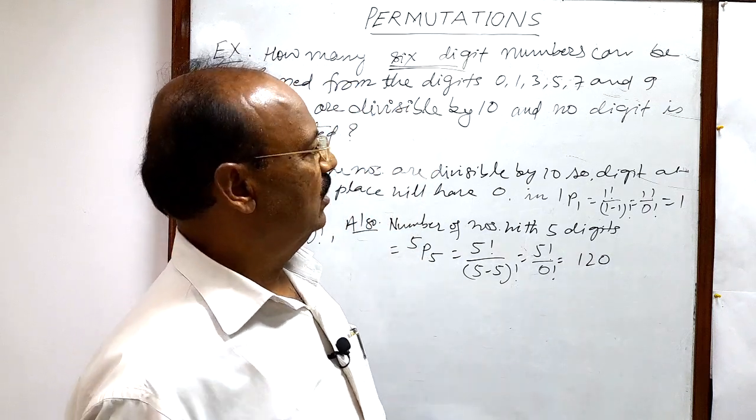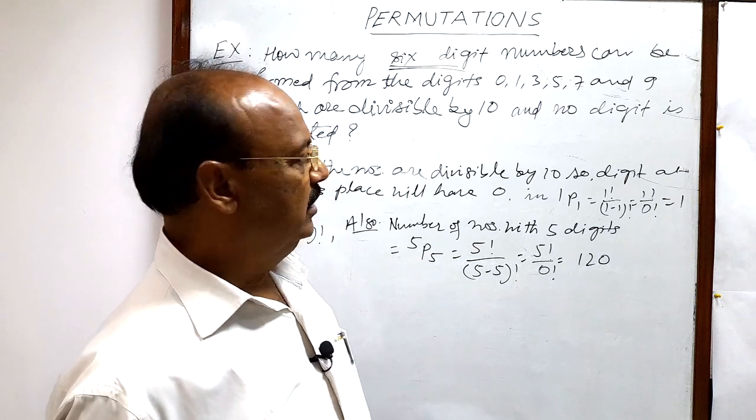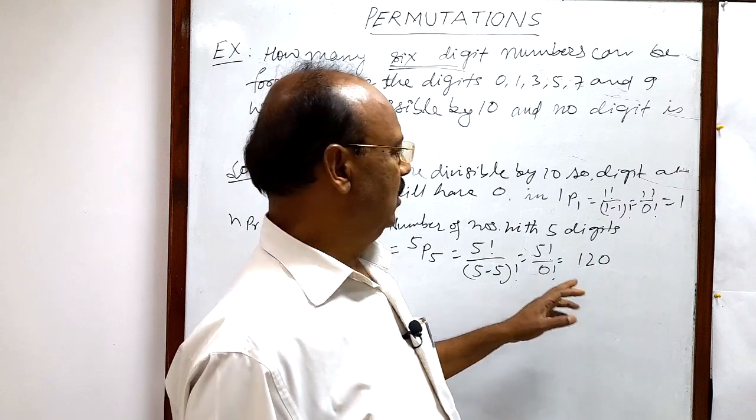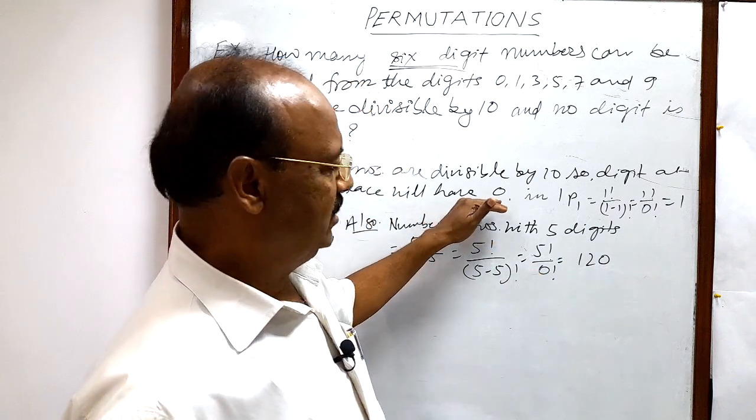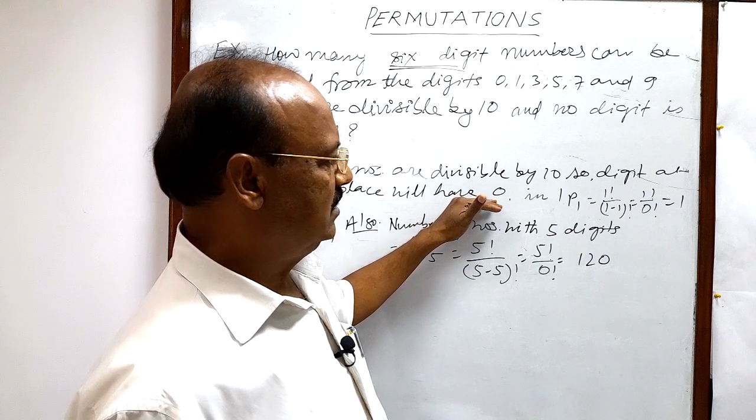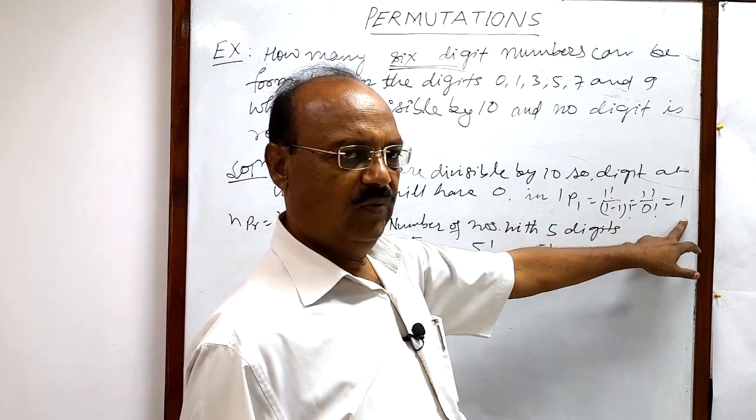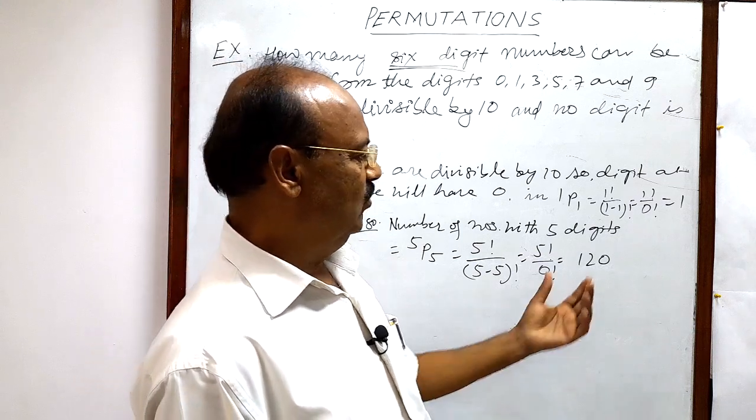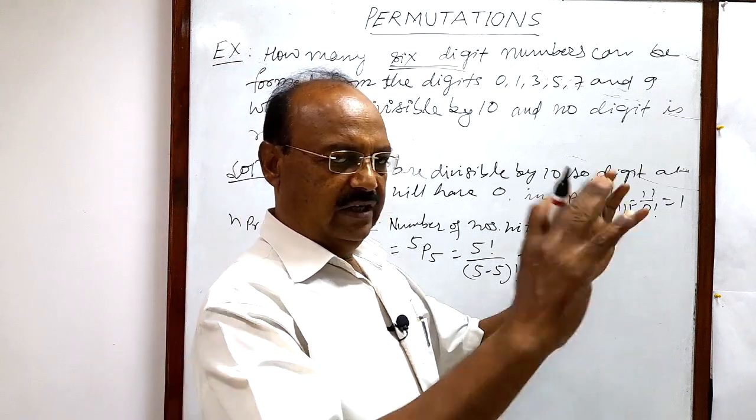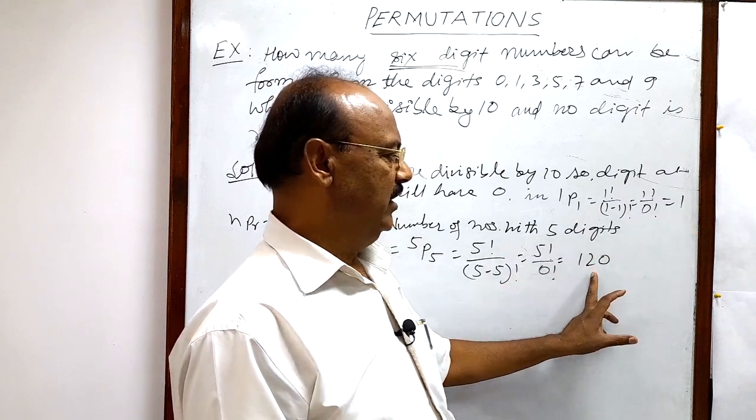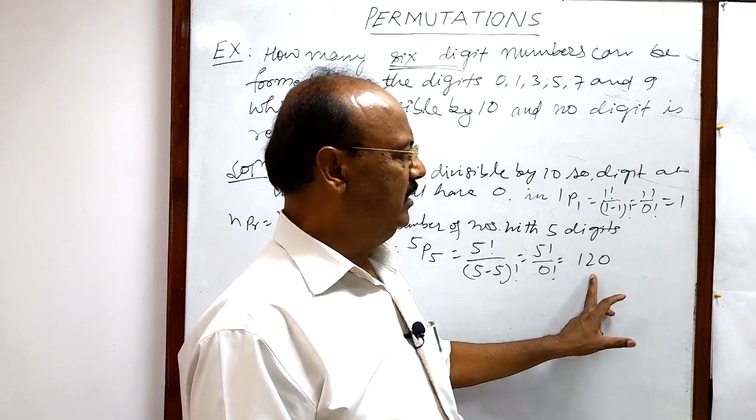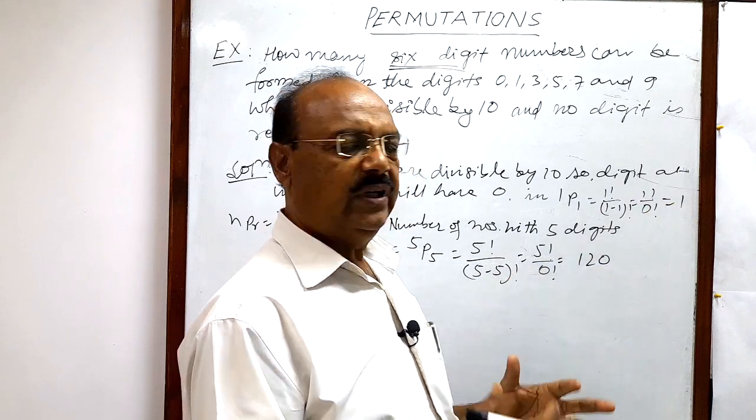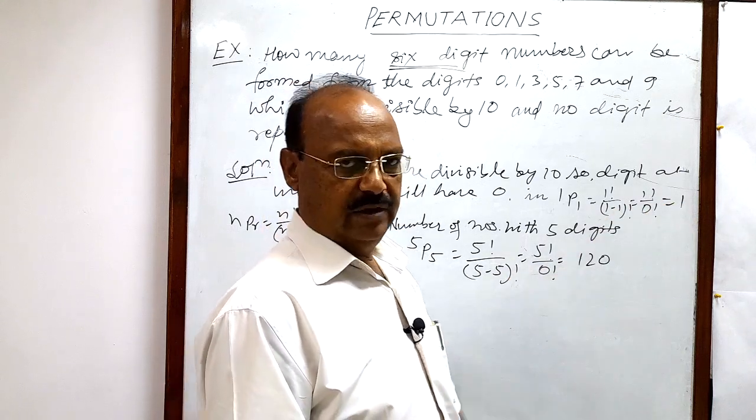So the total number of numbers divisible by 10 will be 1 into 120, because selection of the digit at units place has been made in one way and selection of the digits for remaining 5 places has been made in 120 ways. So the entire job will be done in 1 into 120 ways. Actually there is no change when we multiply 1 and 120, but this is the process, so we should mention this step here.